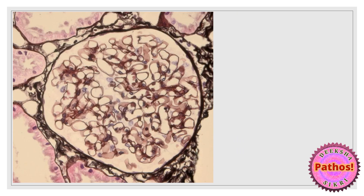This is a silver stain — the Jones methenamine silver impregnation method. Anytime you get a silver stain, you'll get a black-on-pink appearance. You see a nice pink background with whatever is silver-positive appearing in black. The capillary outlines, Bowman's capsule, and tubular basement membranes are all highlighted really well with the silver stain.